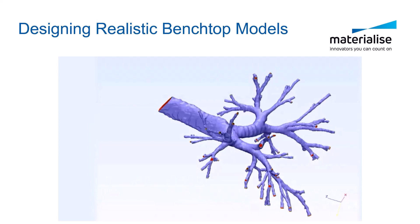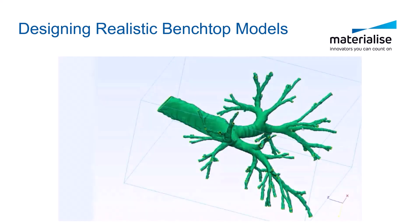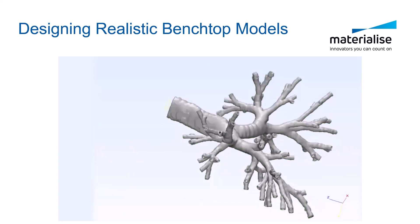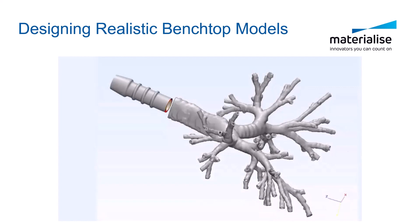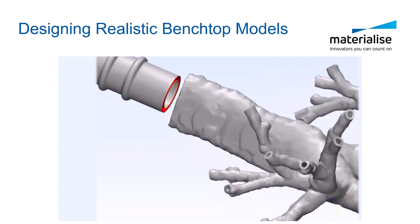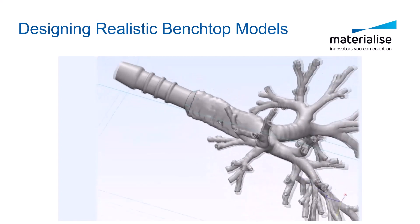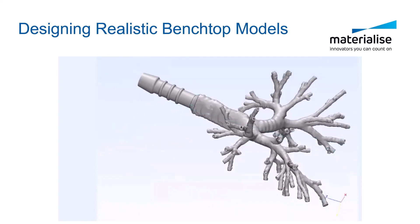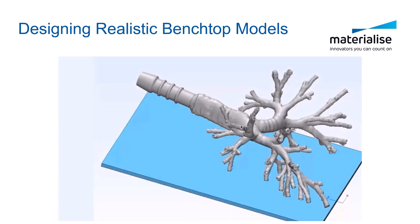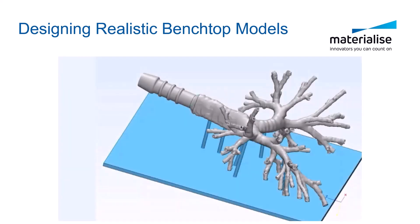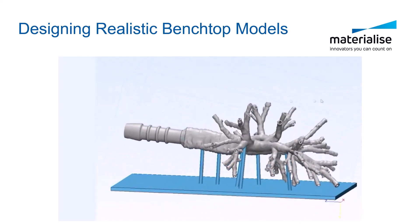Create a hollowed version of the solid airway model. Attach connectors by importing connector STLs and fine-tuning the transition between the two. Design a base plate and auto-create the supporting beams to support that model on the plate. And finally, export the benchtop model for 3D printing.